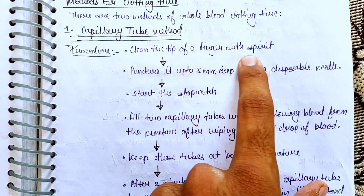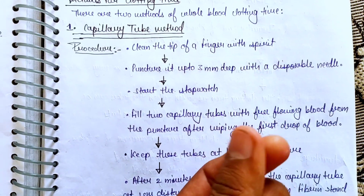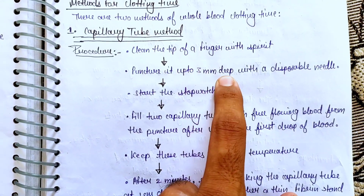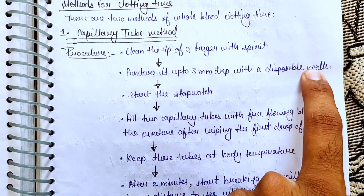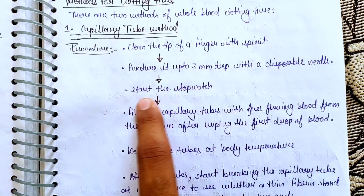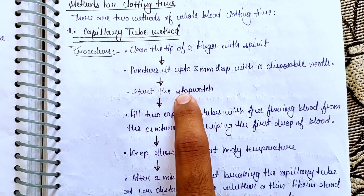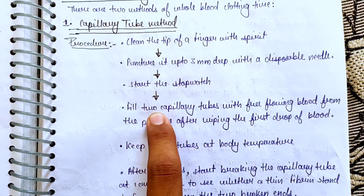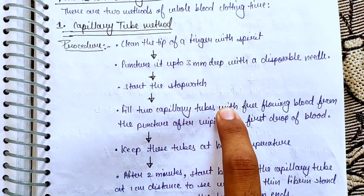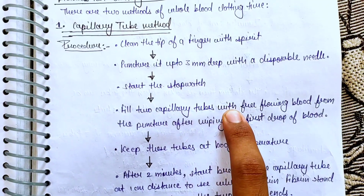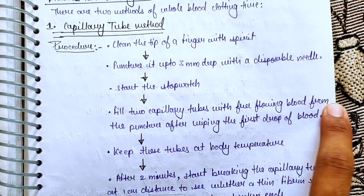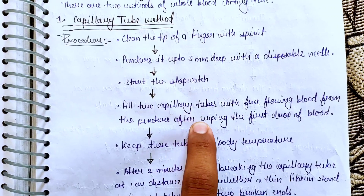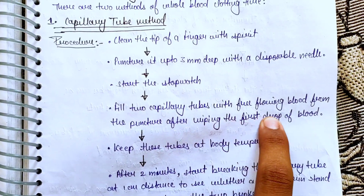In the Capillary Tube Method, first clean the tip of the finger with spirit. Then puncture it with a 3mm deep disposable needle. Then fill two capillary tubes with free-flowing blood from the puncture, after wiping away the first drop of blood.